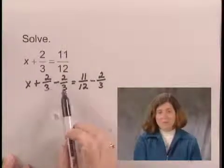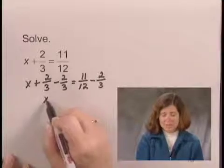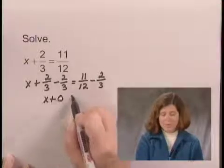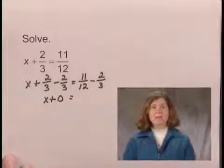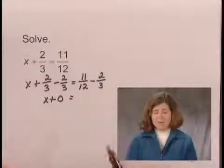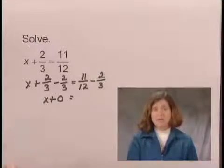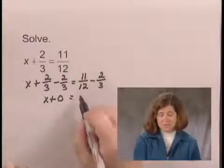x plus 2/3 minus 2/3 is the same as x plus 0. 11/12 minus 2/3, we need to subtract. In order to do so, we need to get a common denominator. Since 12 is a multiple of 3, 12 is our least common denominator.